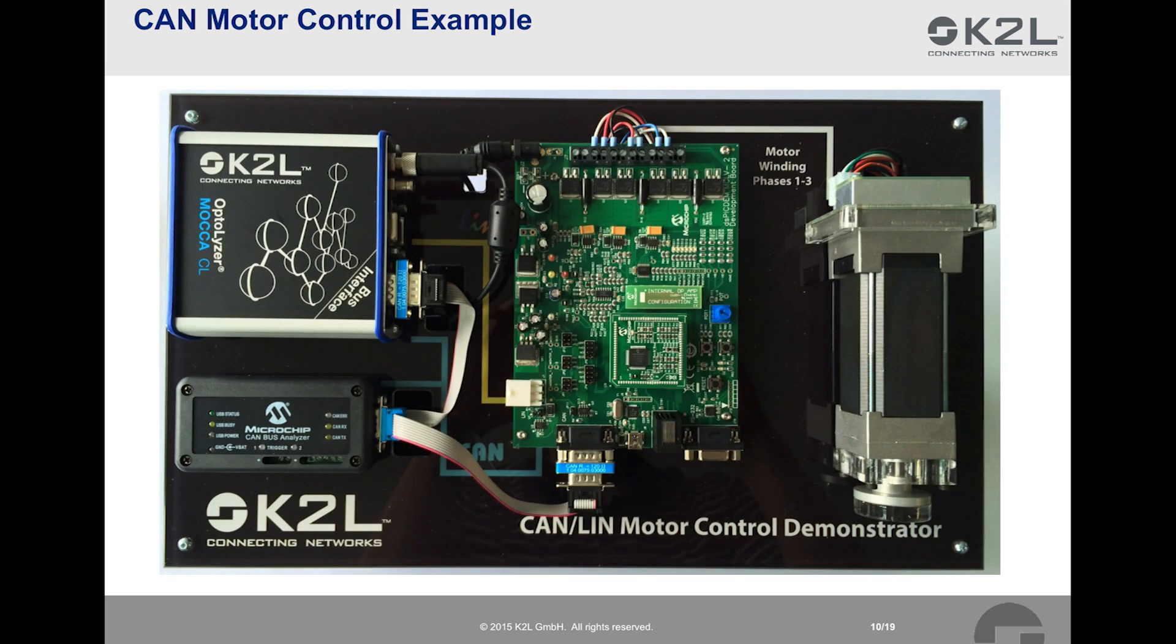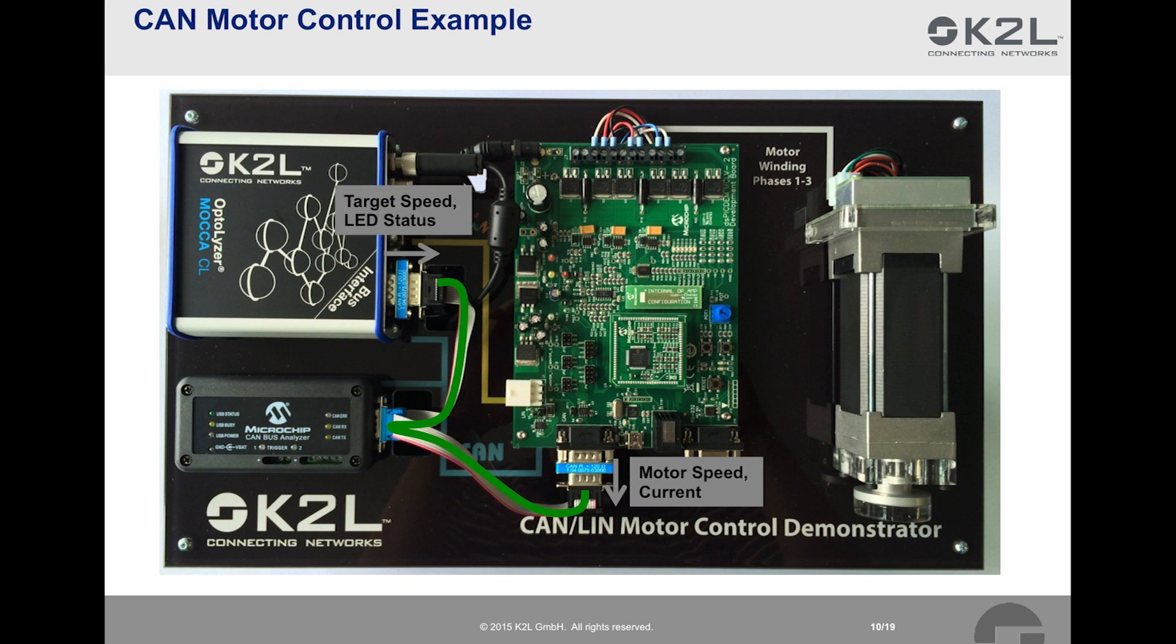Here is the example we want to use in the following. On the right-hand side, you can see a three-phase brushless DC motor that is controlled by a DSPIC DEM MCLV2 development board hosting DSPIC 33E from Microchip. The green motor control board reports the speed of the motor as well as the current that is drawn by the motor over the CAN bus, which is now highlighted in green. On the left-hand side, we see two devices that are also attached to the CAN bus. On the top, we see the Optalyzer Mocha CL that we have already discussed. At the bottom, Microchip's CAN bus analyzer is mounted. The CAN bus analyzer interface features one CAN interface and is also supported by Optalyzer Studio.